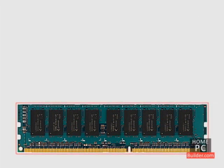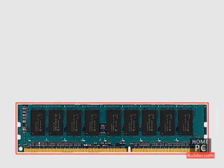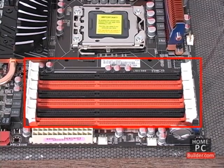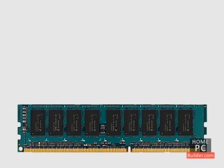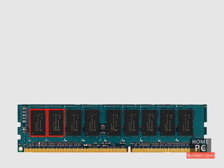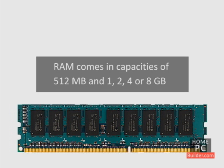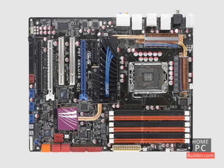Memory comes in the form of a stick that attaches to the computer's motherboard through a memory slot. The memory stick is actually made up of several individual memory chips that, when added up, combine to create the storage capacity of the memory stick. Memory sticks come in capacities of 512 megabytes and 1, 2, 4, or 8 gigabytes. For more on motherboards, see the motherboard component lesson or the installation lessons.